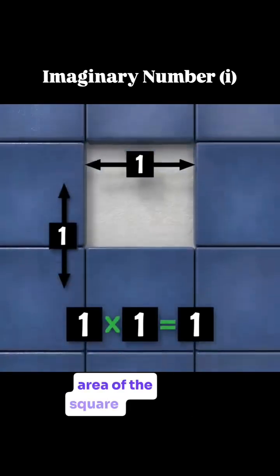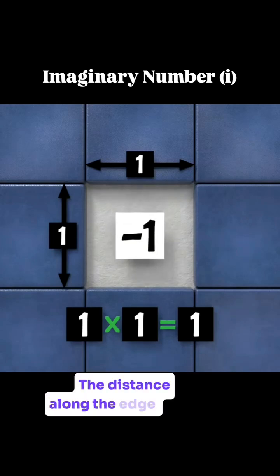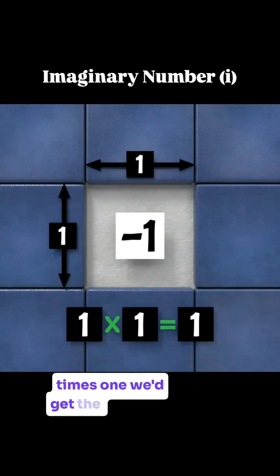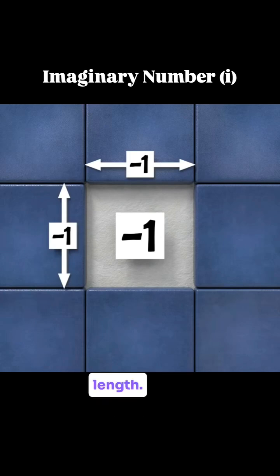But how would we calculate the area of the square hole? Since it's a hole, we know it has a negative area. The distance along the edge of the hole is 1 unit. But if we said the area is 1 times 1, we'd get the incorrect area of positive 1.